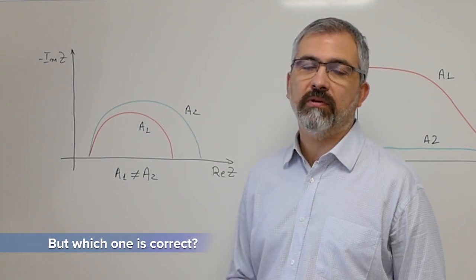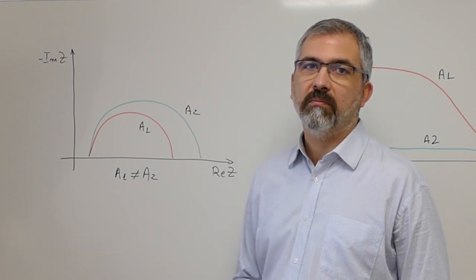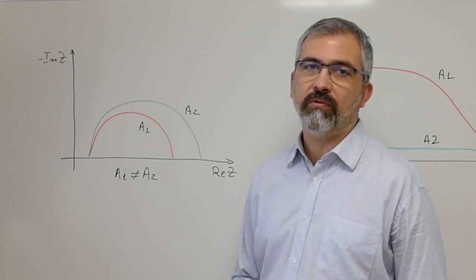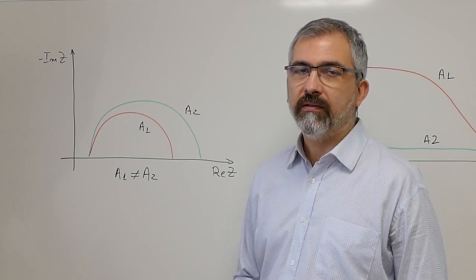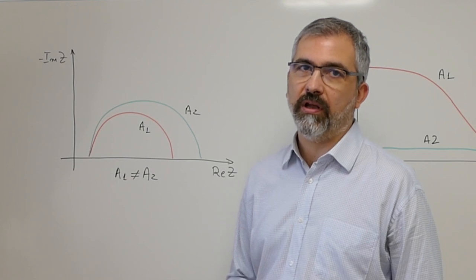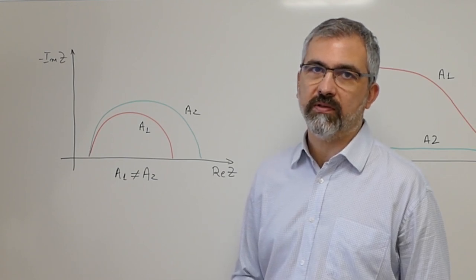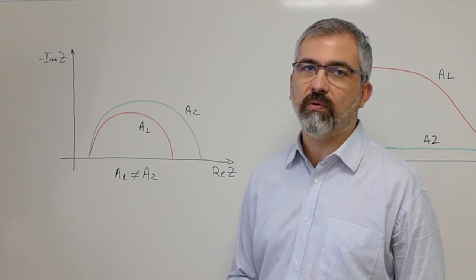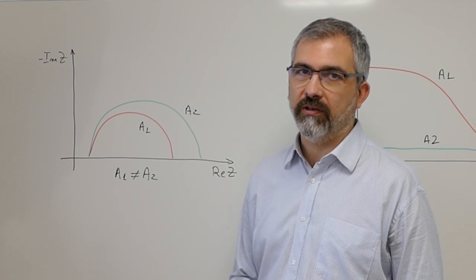Maybe the one conducted with the lowest amplitude. Maybe none of them if the amplitudes were too high. This is the kind of dilemma you may encounter during your EIS experiments. And this is where the EIS quality indicators can make the difference.